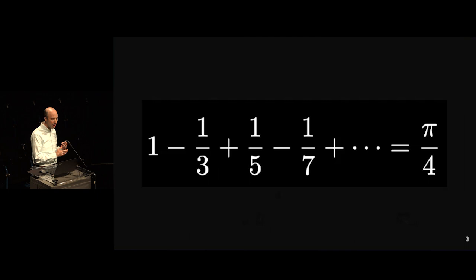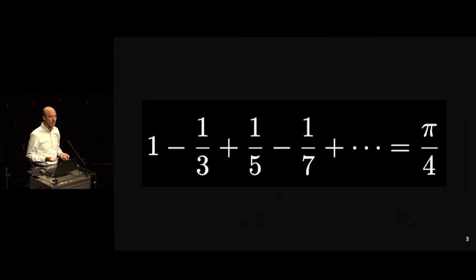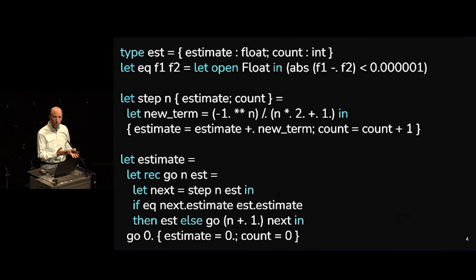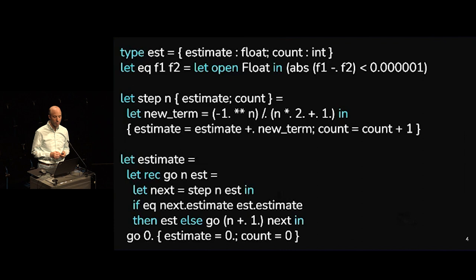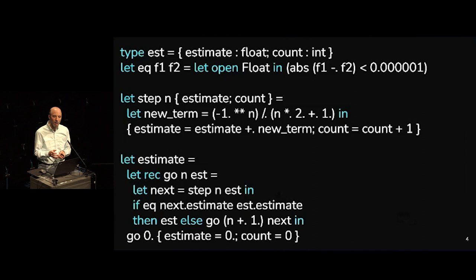Let's start with a motivating example. This is a series that converges to pi — if we add enough terms we will eventually get pi over four, but it takes many many terms; it's a very slowly converging series. I want to write a program that uses this computation. Up at the top we have an estimate type — a little record tracking the current estimate of pi over four as well as the number of steps taken, the count.